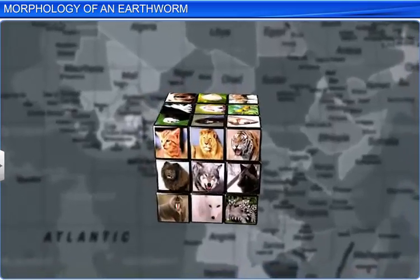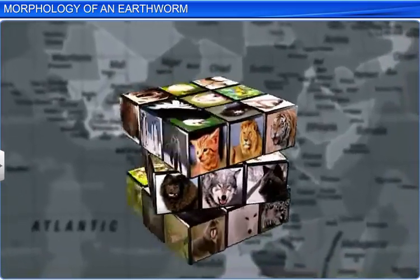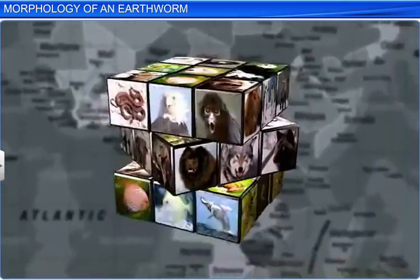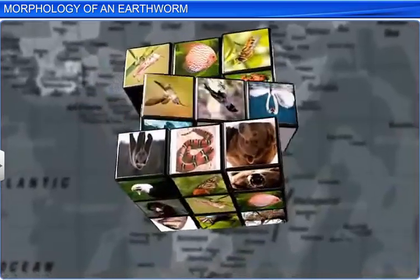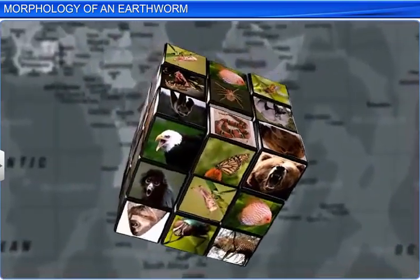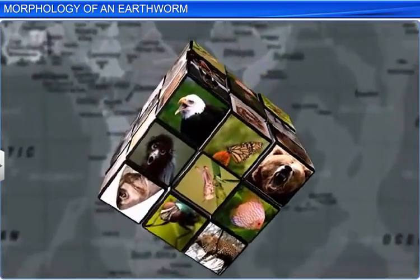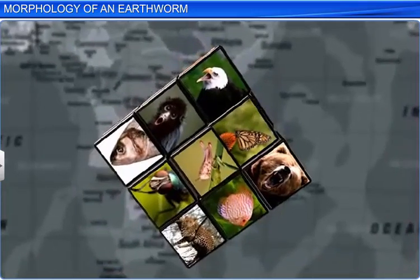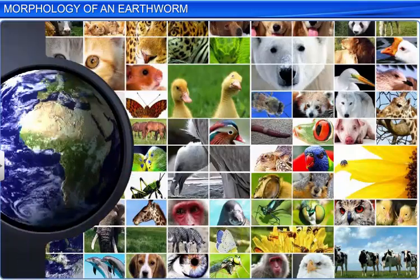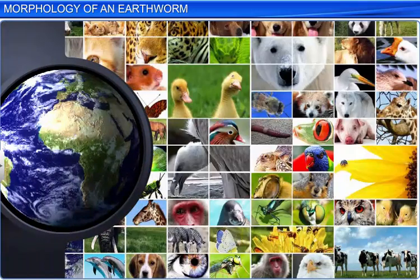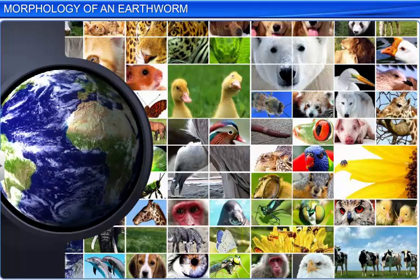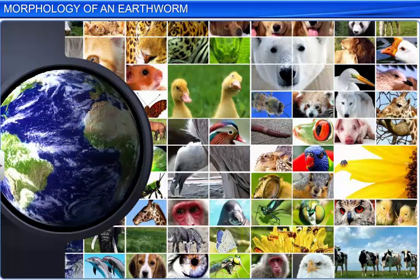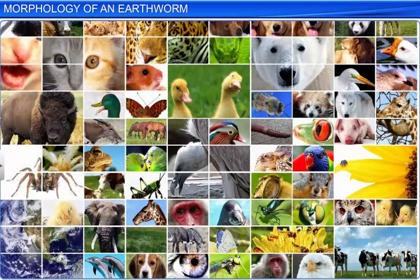There are thousands of animals on our planet. These animals exhibit some morphological similarities and differences. Morphology refers to the study of external features or characters of organs or body parts. Let's take a look at the morphological features of an earthworm.